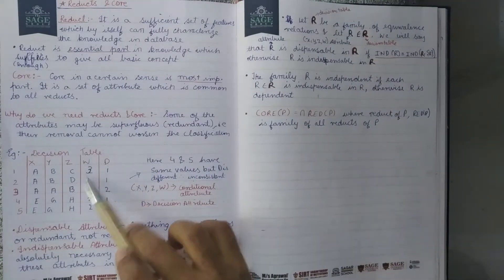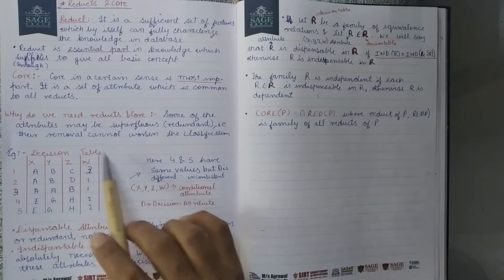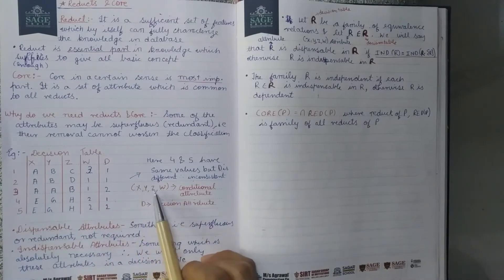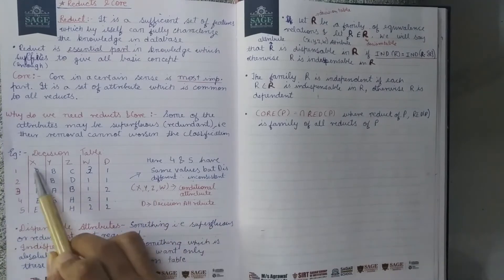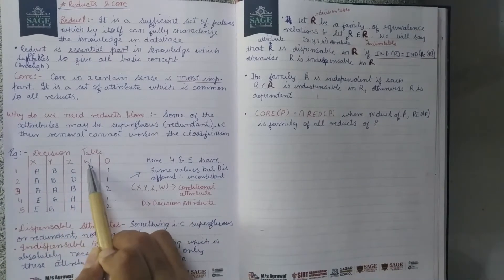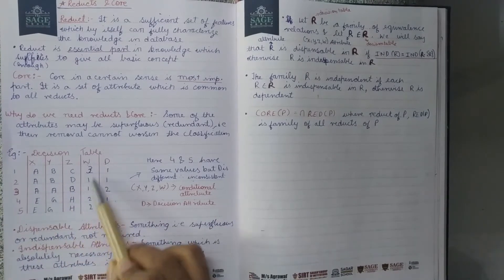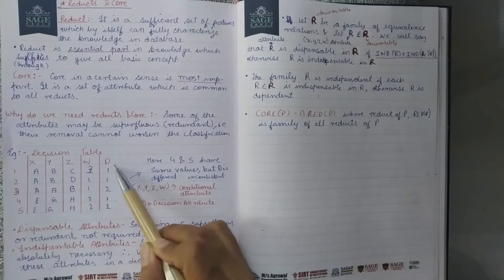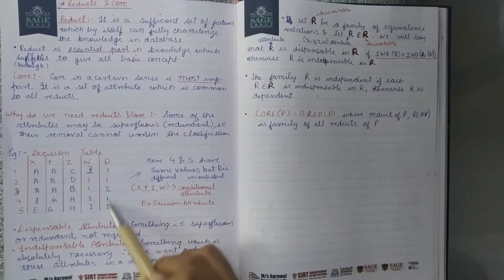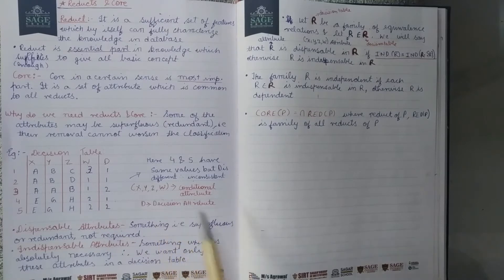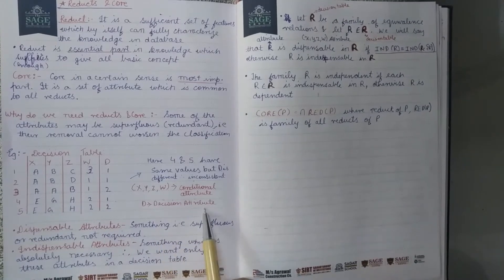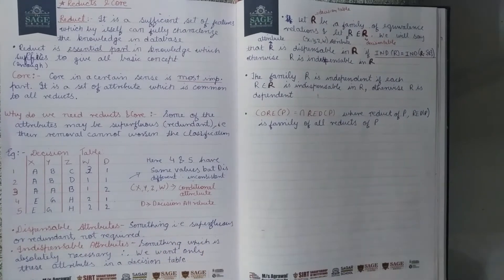For example, consider this decision table. In the decision table, we have X, Y, Z, and W — these four are conditional attributes. We also use D, the decision attribute. So the four conditional attributes are X, Y, Z, W and D is our decision attribute.